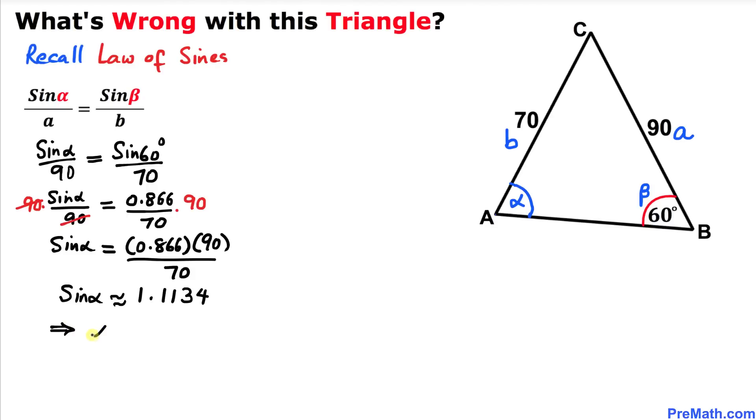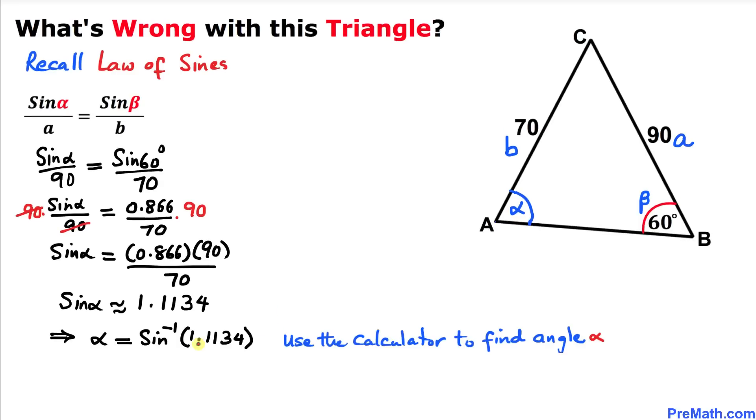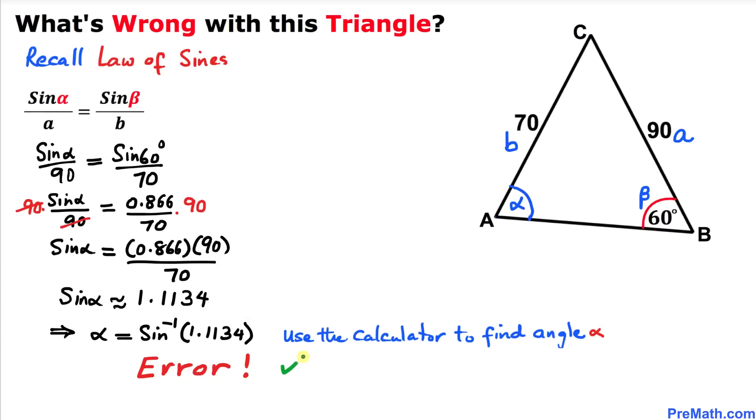Then we can write our angle alpha as equal to sine inverse of 1.1134. Now if we plug in these values in your calculator to calculate angle alpha, it is going to give you an error.